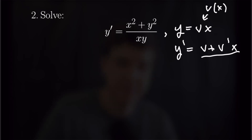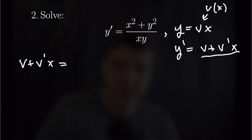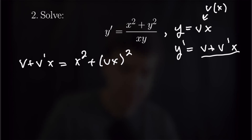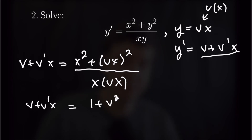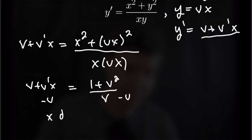We can substitute this into our original equation. So we'll have v plus v prime times x is equal to x squared plus (vx) squared over x times x times vx. We can factor an x squared out of the numerator to get v plus v prime x is equal to 1 plus v squared over v. Subtracting v from both sides, we get x times dv over dx equals 1 over v.